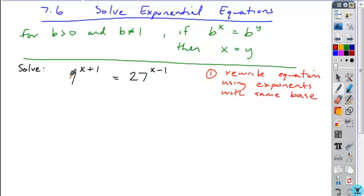Yeah, that base is 3, so we can say 9 is 3 squared to the x plus 1, and 27 is 3 cubed to the x minus 1.